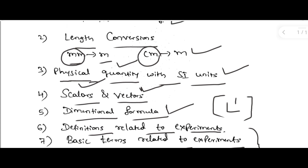Each VAWA question carries one mark, totaling four marks. Six marks are for the practical record book, called the journal. Twenty marks are for performing the experiment step by step during the examination. So the total allotted marks is 30 marks. Thank you.